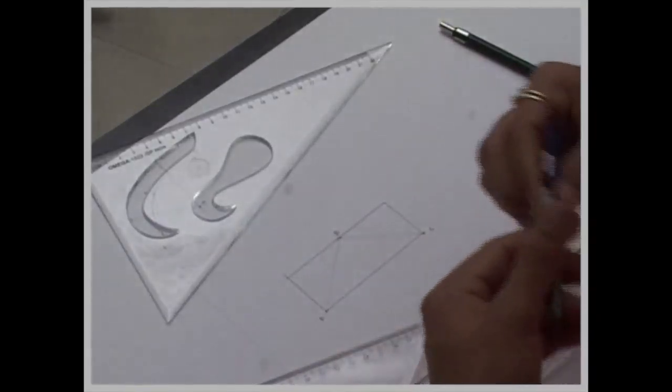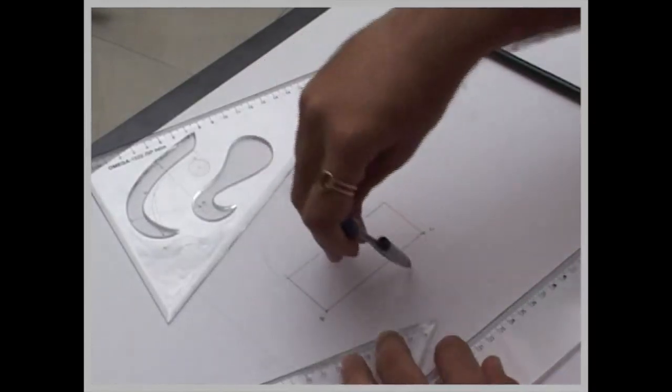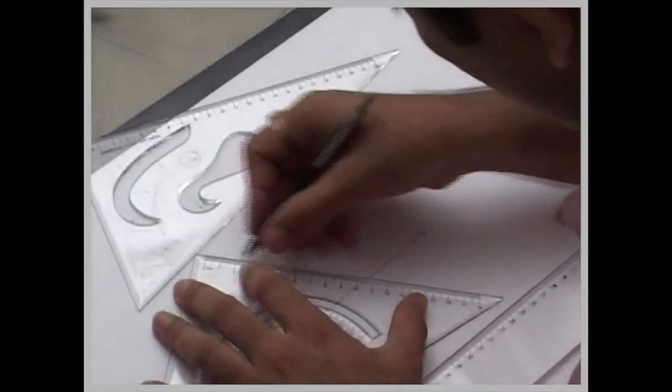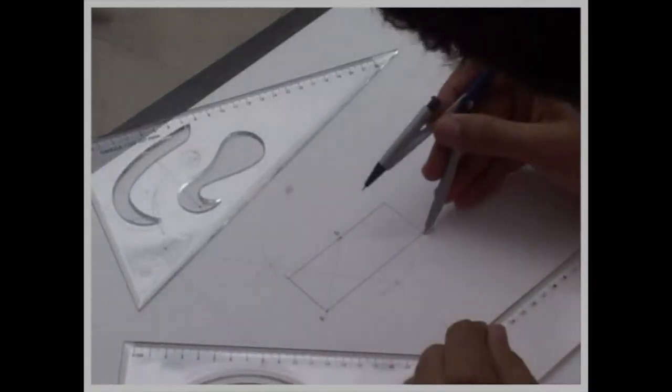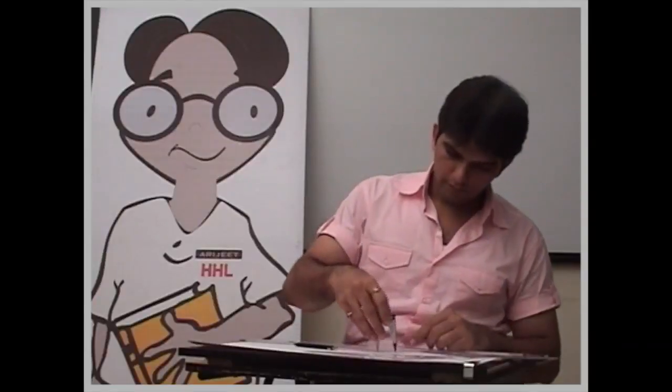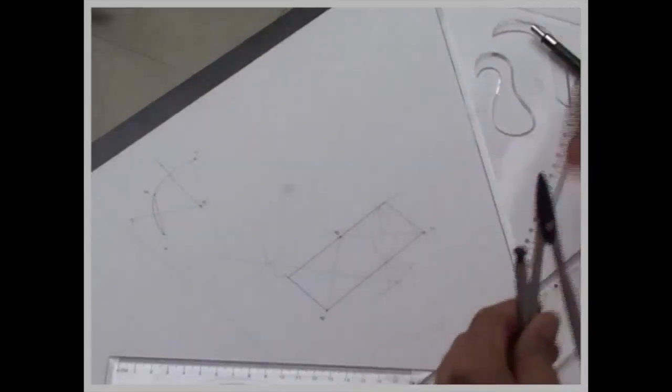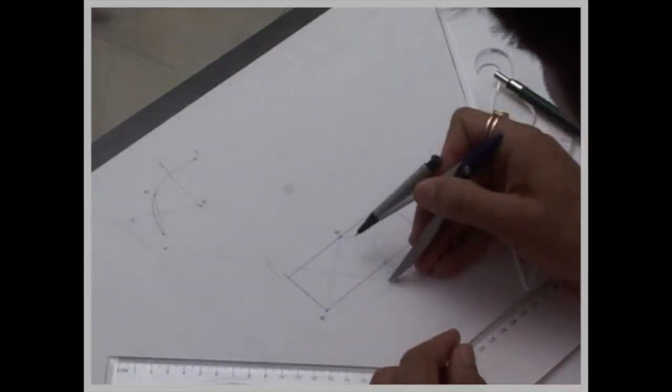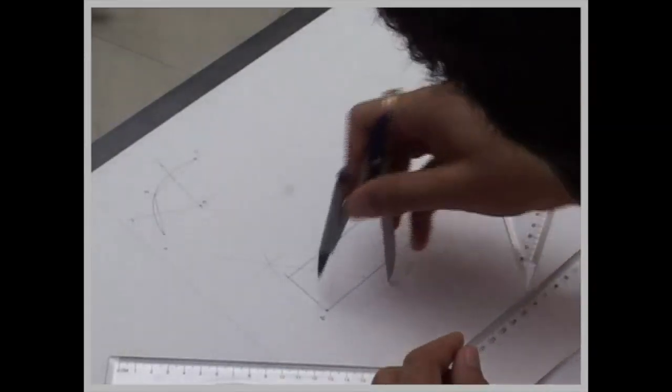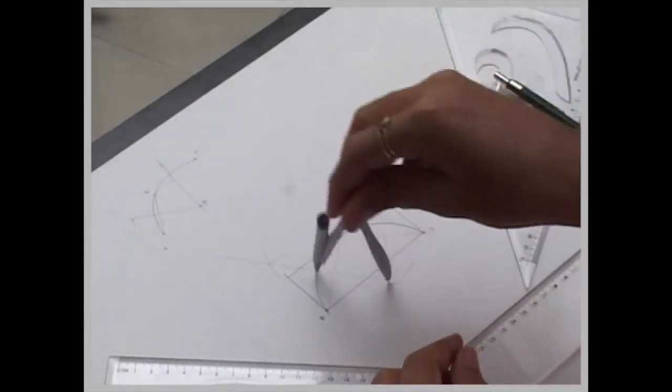Then I am bisecting. They will intersect - that is O. And from O I can draw an arc.